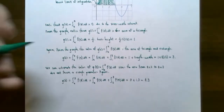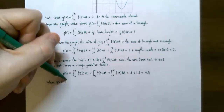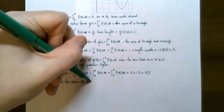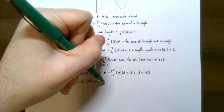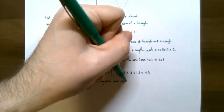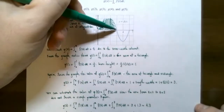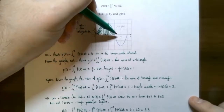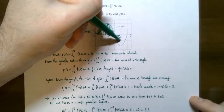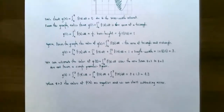When t is greater than three, the values of f of t are negative because the function is below the horizontal axis, so we begin subtracting areas. Between t equals three and t equals four, the function is below the t-axis, making that area negative in terms of the definite integral. The area from three to four looks identical to the area from two to three, so we subtract 1.3 again.